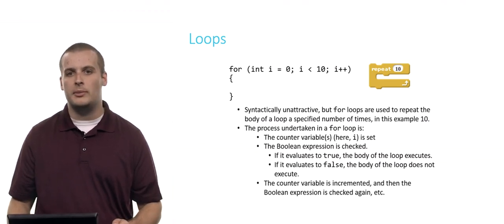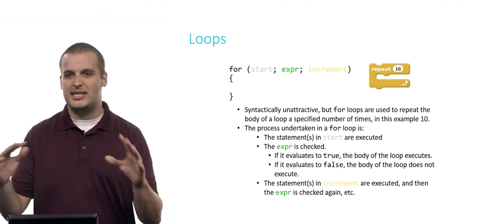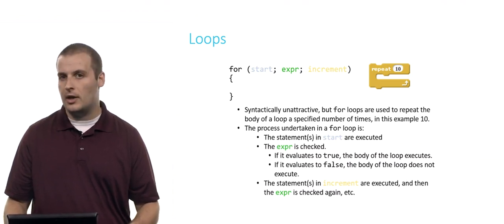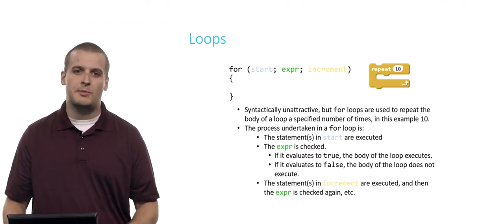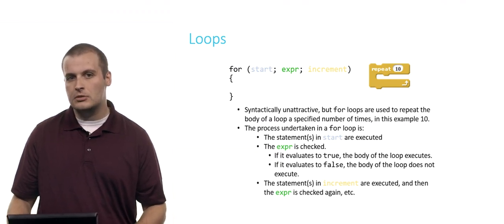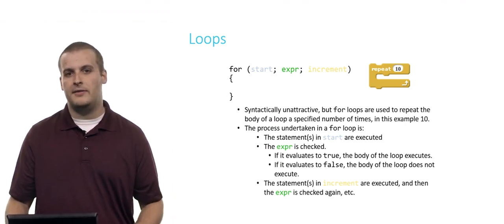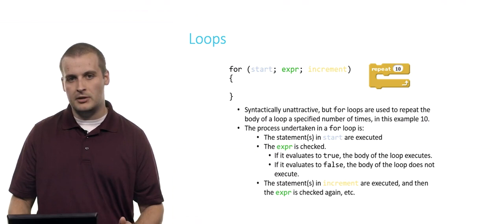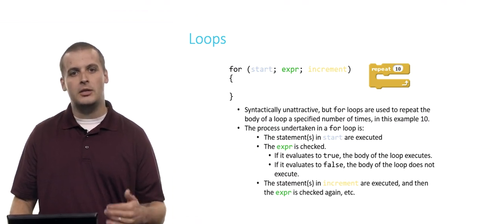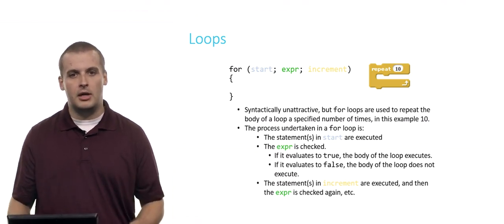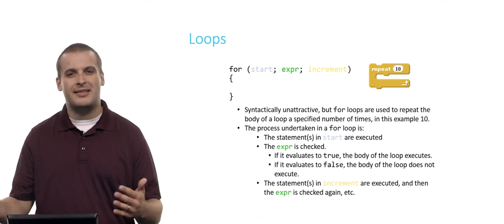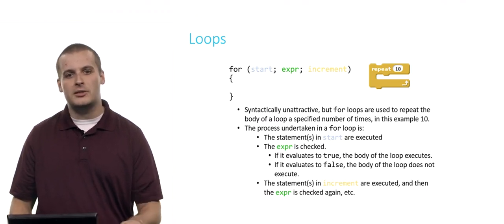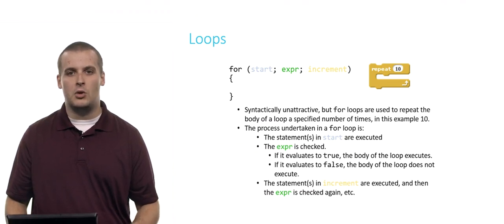Now taking away the actual code and putting it in some basic general statements, here's what happens. All of the statements in start are executed first. You might have more than one. Then the Boolean expression is checked. If the expression evaluates to true, execute the body of the loop one time. If the expression evaluates to false, we're done. We don't execute the body of the loop at all. After we've executed the body of the loop one time, we then do what is in the increment part there, which is usually going to be something like i plus plus or something like that that modifies a counter variable. Then after we increment, we check the expression again, and repeat those steps over and over until the expression is no longer true.